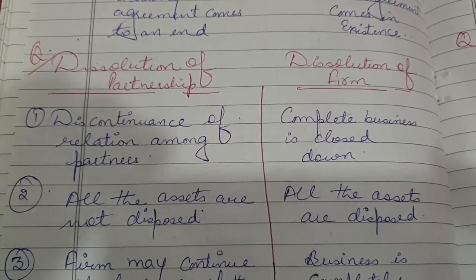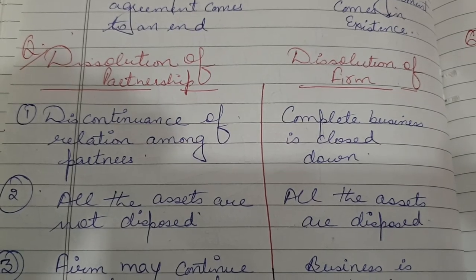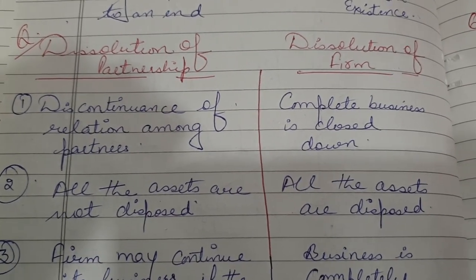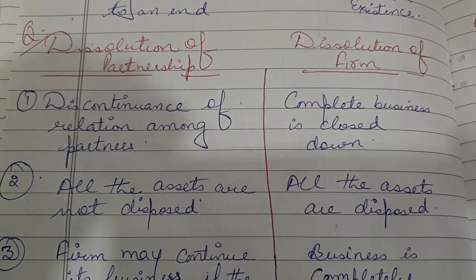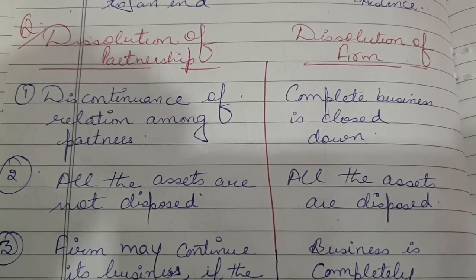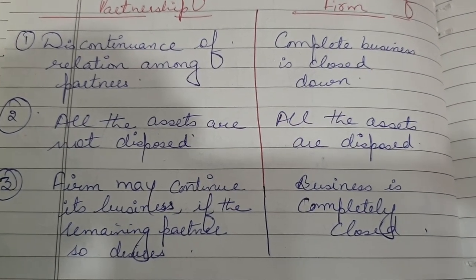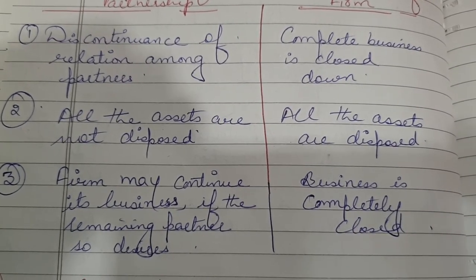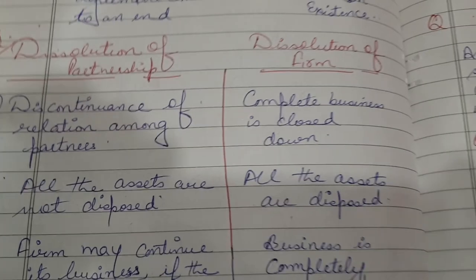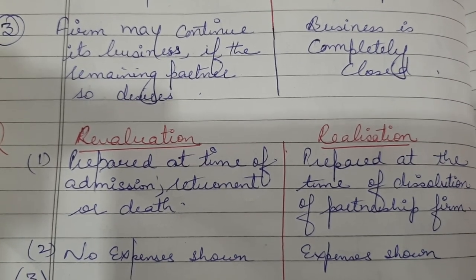An important difference: dissolution of partnership versus dissolution of firm. In case of dissolution of firm, all the assets are disposed of. In case of dissolution of partnership, the firm may continue its business if the remaining partners desire to do so. But in case of dissolution of firm, the business is completely closed.